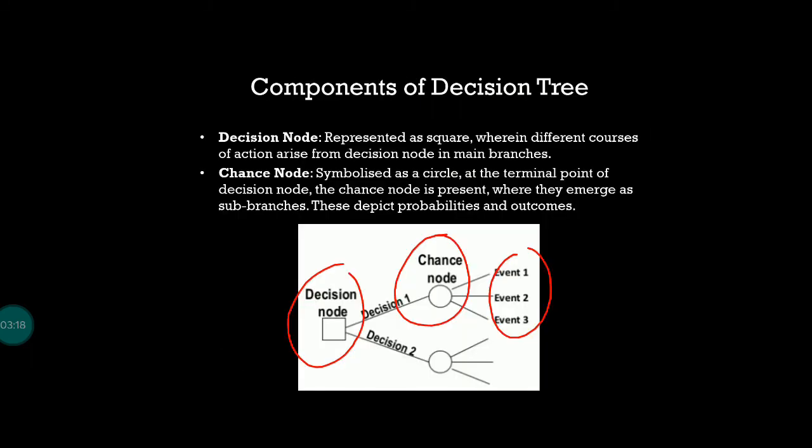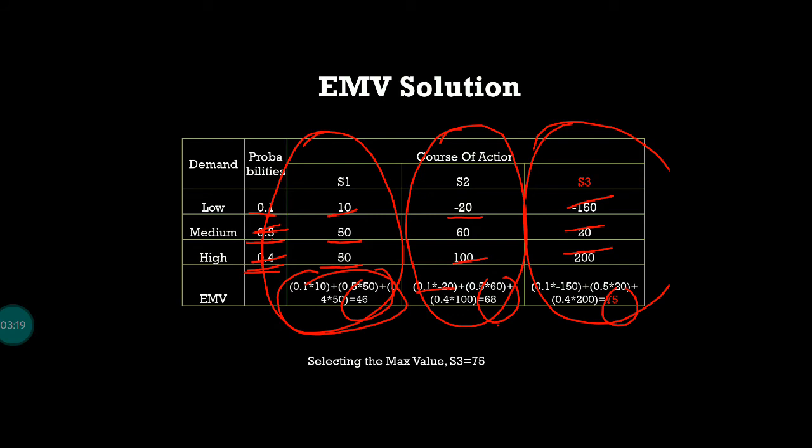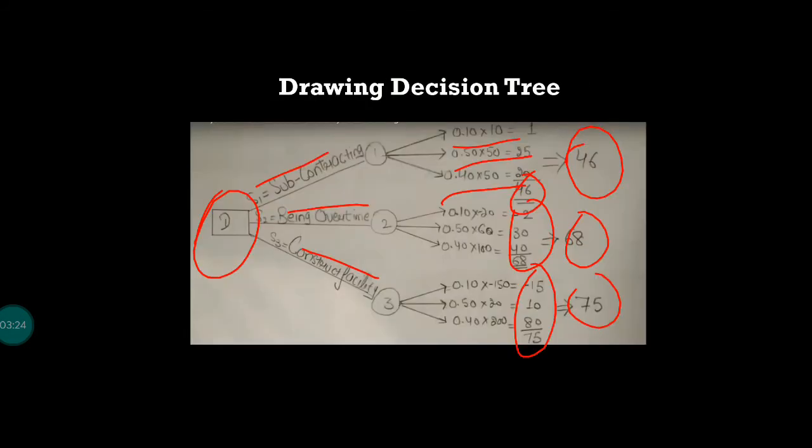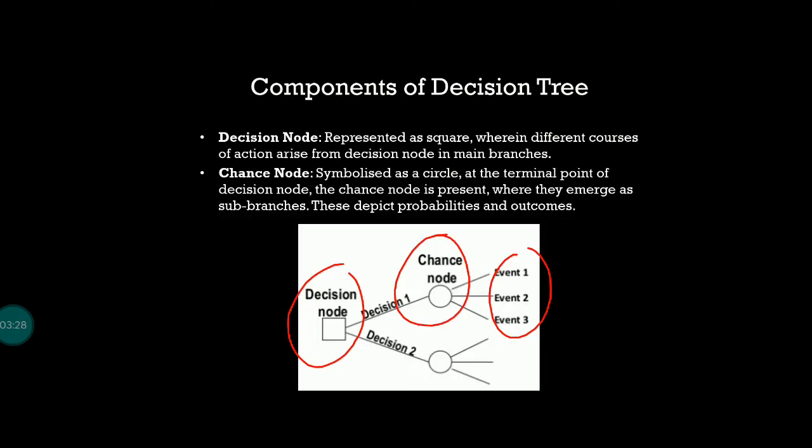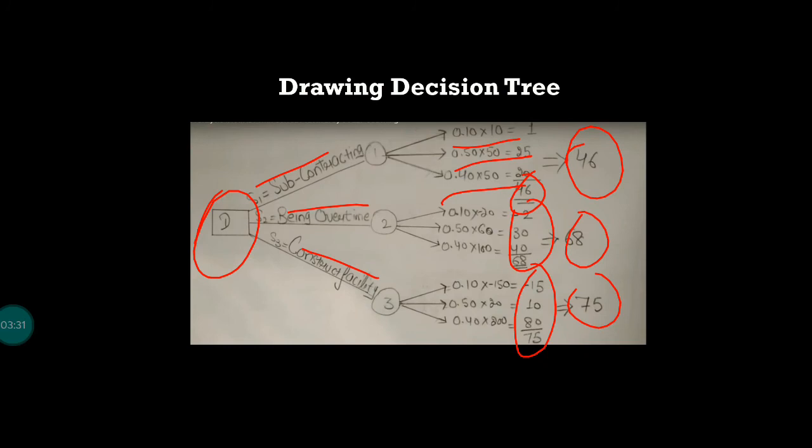Once again, I would just brief what happens: we find out the EMV, expected monetary value, for the particular question. Then you draw it - you have a decision node, a chance node, and the events. You have the decision node drawn, then you have the three different alternatives.